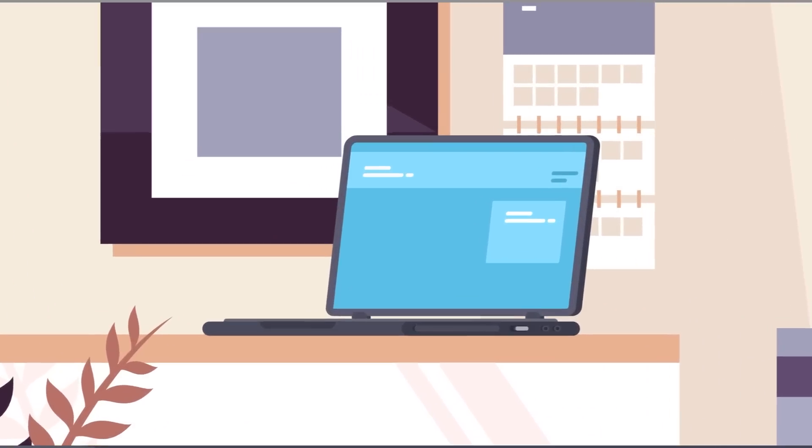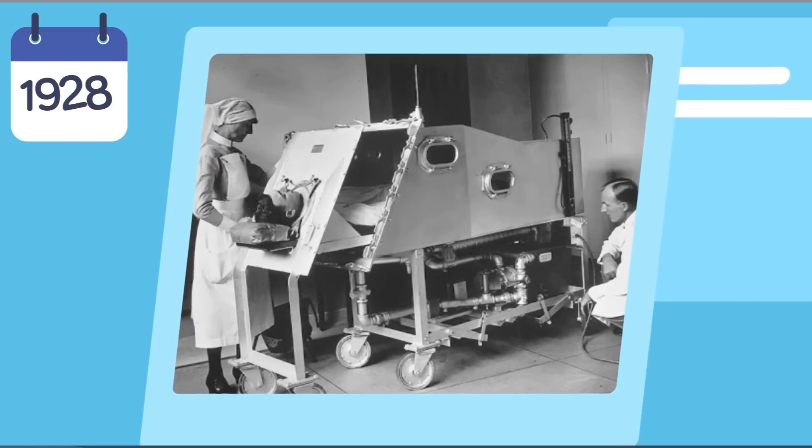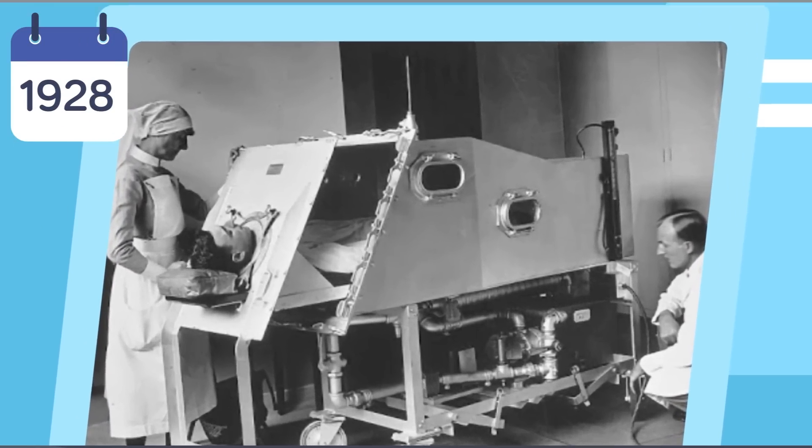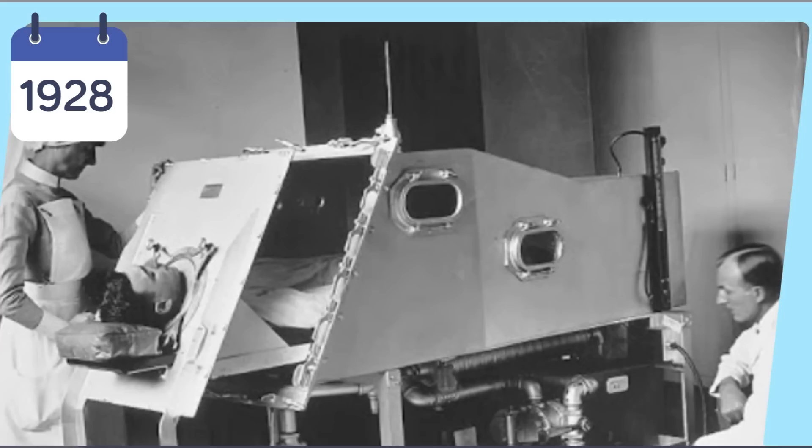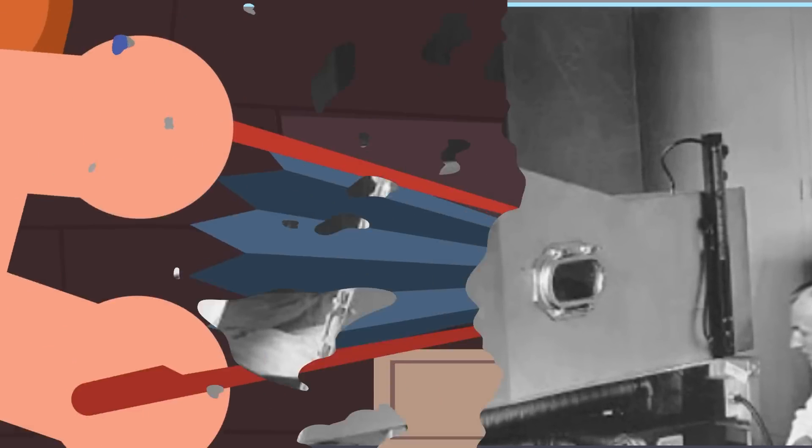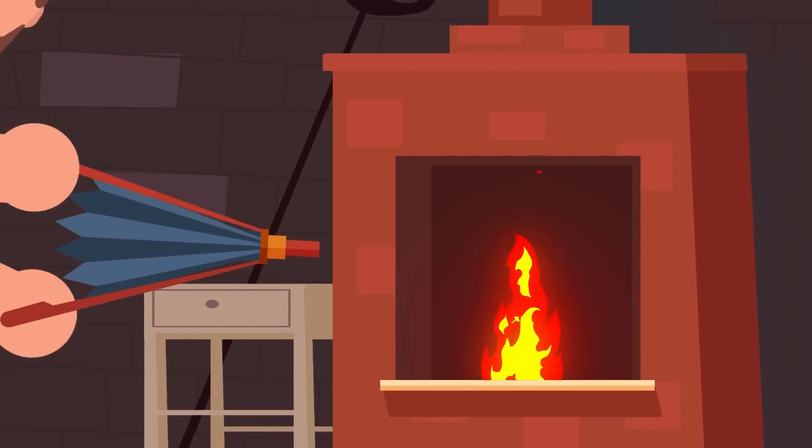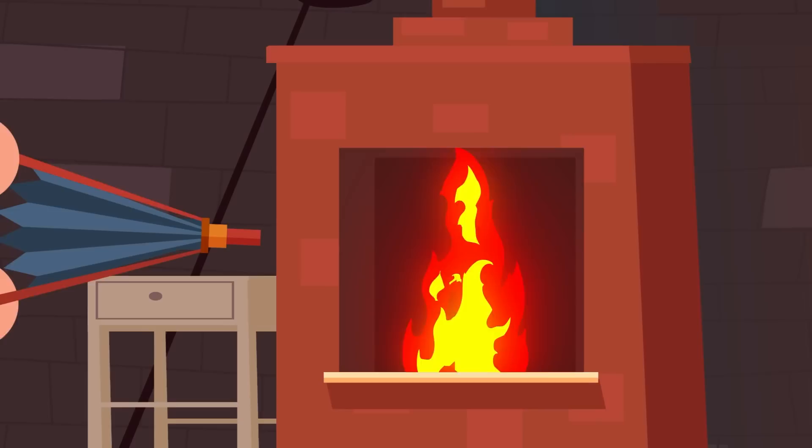While at Harvard in 1928, Drinker and Shaw developed the first widely used version of the device. It consisted of a huge metal casing with a bellows attached at one end to pump air in and out. The bellows is used to create a blast of air, normally by squeezing a flexible airbag between two rigid boards.